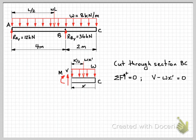minus w times x dash. They're the only vertical forces that we have, so all of that's equal to zero. Rearrange the equation, and we get V equals 8 times x dash as our shear force equation.